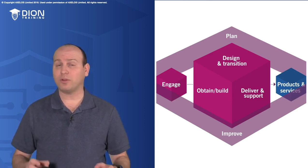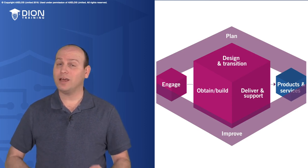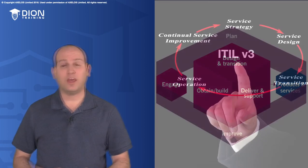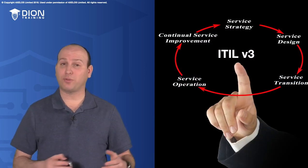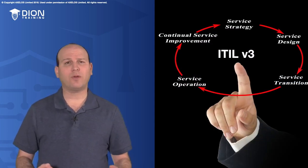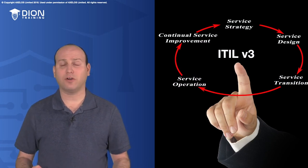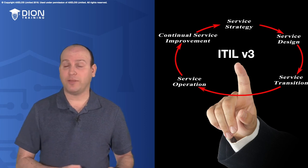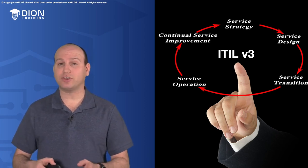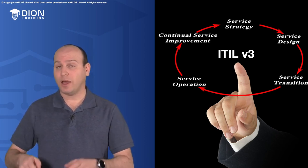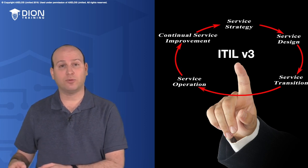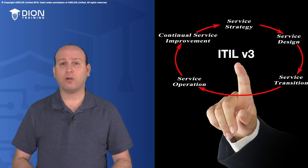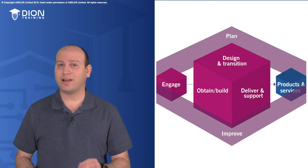There are a couple of important things to know when we look at a diagram like this. This is not shown to introduce a linear sequence of events. If you happen to be familiar with ITIL version three, we had what we called the service life cycle, which was a sequence of actions in a linear format — starting with strategy, then design, then transition, then operations, and then continual service improvement. Here in ITIL 4, we don't do that anymore. This is not a linear sequence.